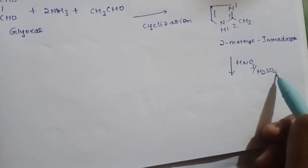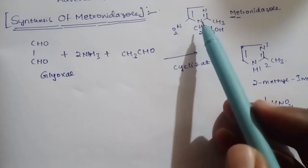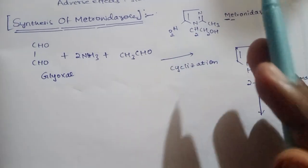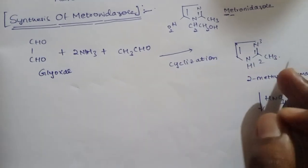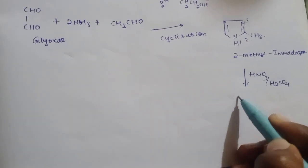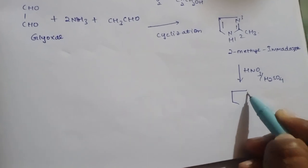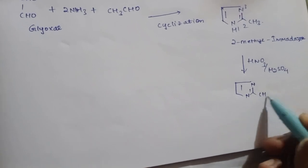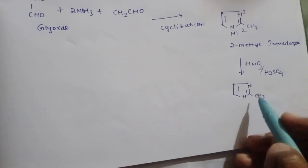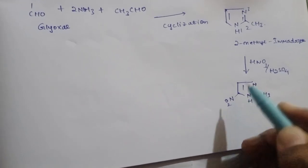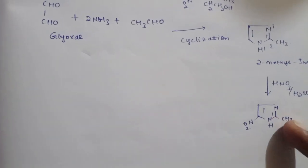Nitration is carried out in the presence of HNO3 and H2SO4. Since metronidazole contains a nitro group, we perform nitration to introduce NO2. After nitration, we get the same basic imidazole structure with the methyl group and the newly added NO2 group.